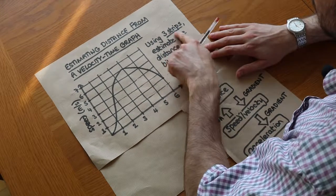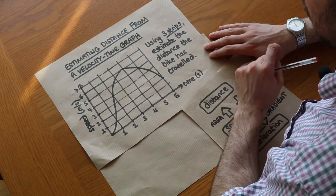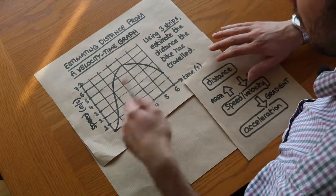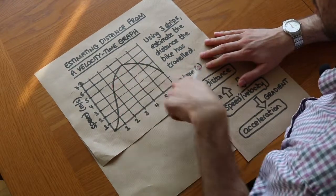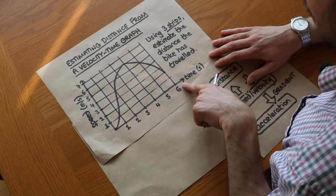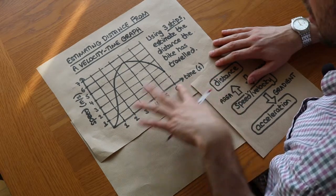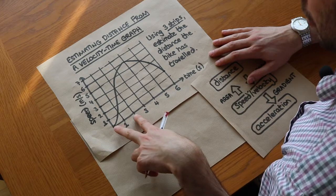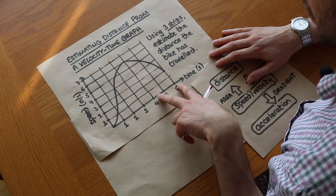Now the question will tell you how many strips it wants you to divide it up into. So it tells us it wants to divide it up into three strips. So three strips, kind of vertically like that. Now the bike has been going for six seconds, so if we divide that time up into three strips, that's going to be two second intervals. So we've got two seconds, two seconds, two seconds.